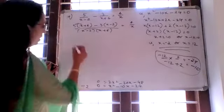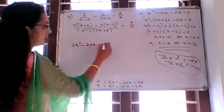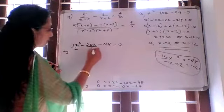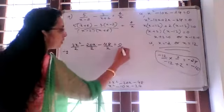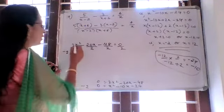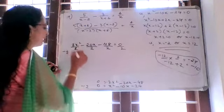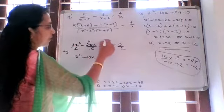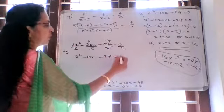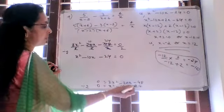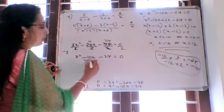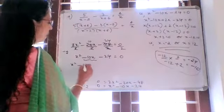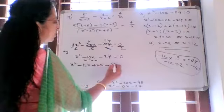Starting from 2x squared minus 20x minus 48 equals 0, dividing every term by 2: 2x squared by 2 cancels to x squared, giving x squared minus 10x minus 24 equals 0. Splitting the middle term negative 10 into negative 12 and positive 2: x squared minus 12x plus 2x minus 24 equals 0.